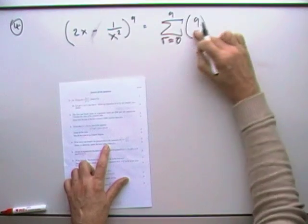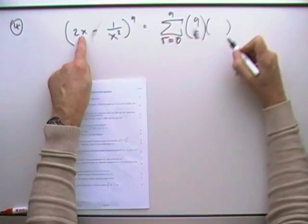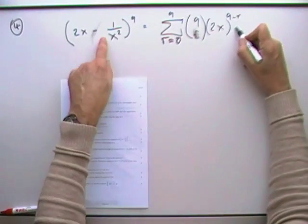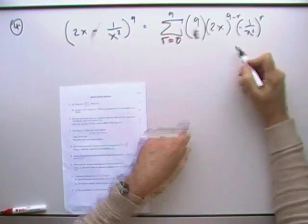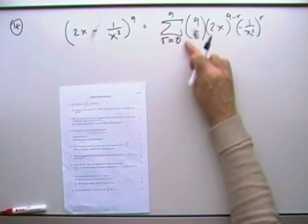the binomial coefficient, that's the combinations. And then go in with the two parts: the 2x starting off at that one, and the negative 1 over x squared starting off at the bottom one. The two of them, that has to be n minus r. The two of them adding up to 9. But it's only this part I actually want